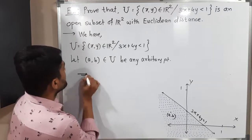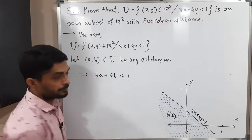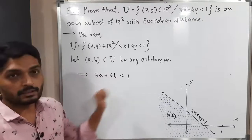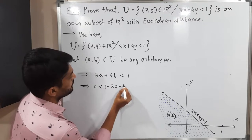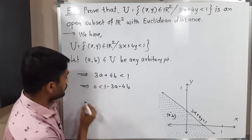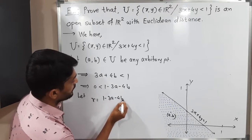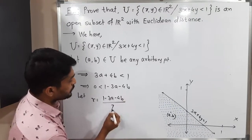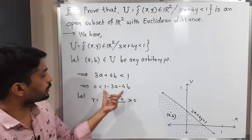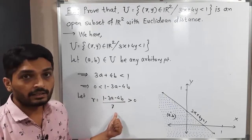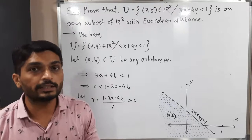Since (a, b) satisfies the condition of U, we can write 3a + 4b < 1, which means 0 < 1 − 3a − 4b. Now I am selecting my radius: r = (1 − 3a − 4b) / 7. Obviously r > 0, since we have a positive real number divided by 7, so r is a positive real number.